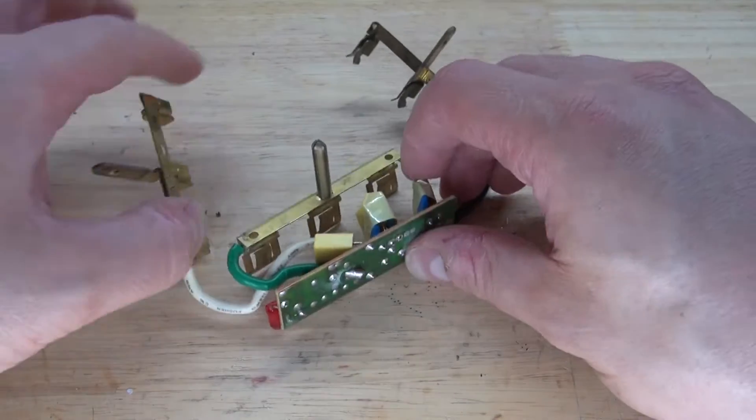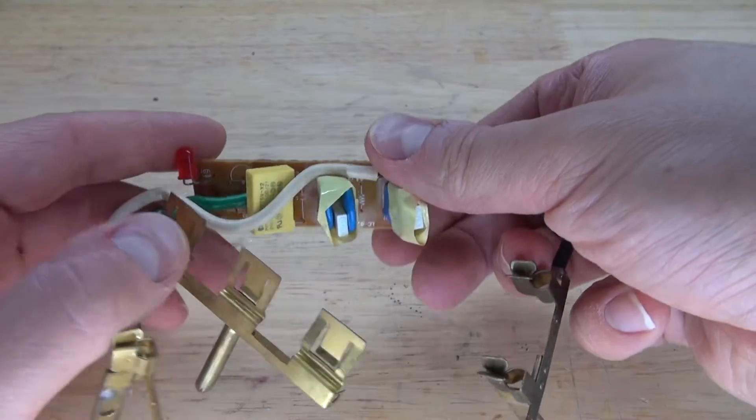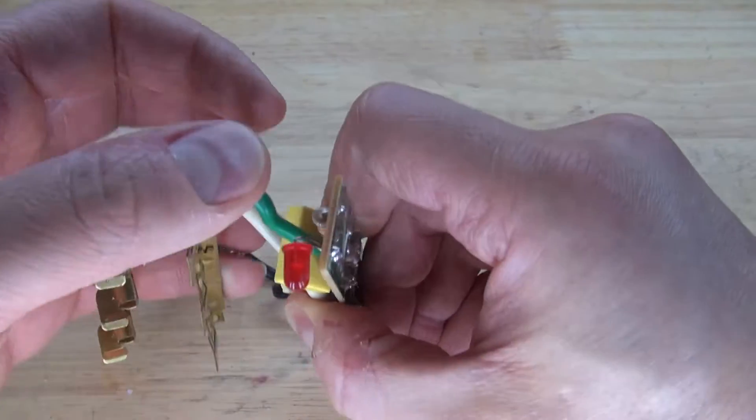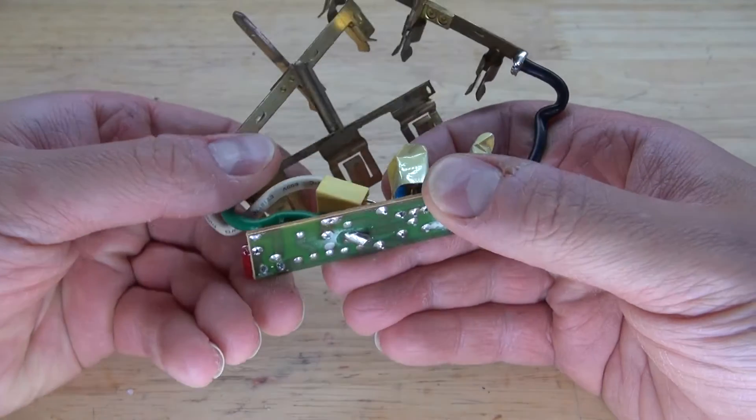So now what I'm going to do is simply separate them. And you can see that this circuit is a very simple circuit, using very few simple components, like this 2W 24K ohm resistor.